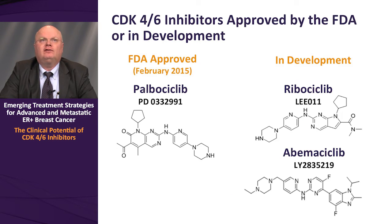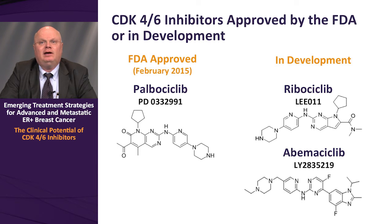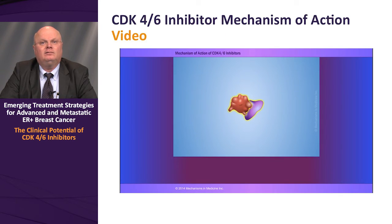CDK4-6 inhibitors are either FDA-approved or currently in clinical development. Palbociclib was the first in class to receive FDA approval in February 2015 for treatment of ER-positive metastatic breast cancer. Ribociclib and abemaciclib are two further CDK4-6 inhibitors currently in clinical development, showing promising early results.